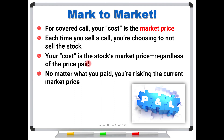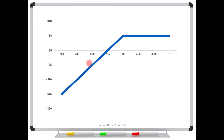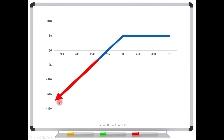No matter what you paid, you are risking the current market price — that's what's most important. Sure, you might have initially paid a hundred bucks and have a cost basis of seventy or even negative five, but right now the stock is trading for three hundred. So if you were to write another call for five bucks, your risk graph looks like this — the bend is at three hundred. It doesn't matter that you paid a hundred; you could have sold your shares right now for three hundred. By choosing to write calls against it, you are putting three hundred dollars of value at risk, and the risk is entirely to the downside.